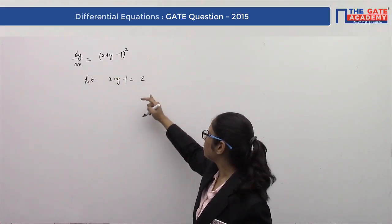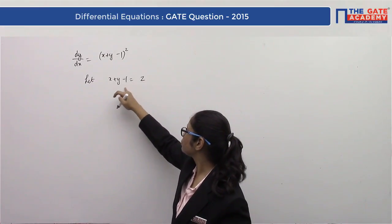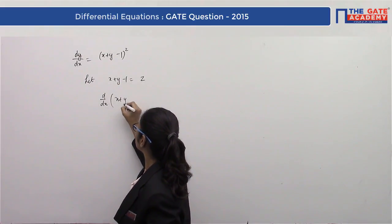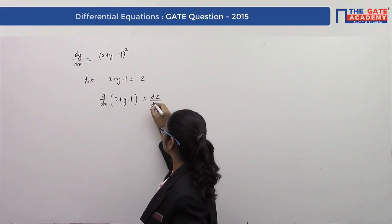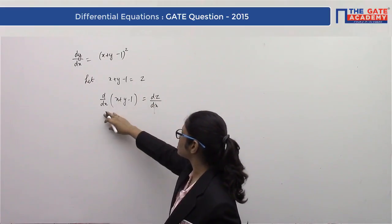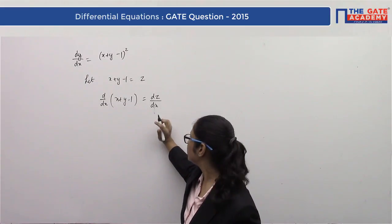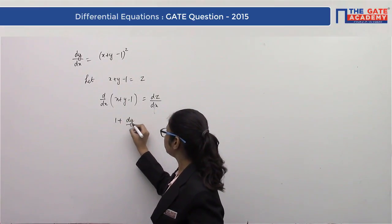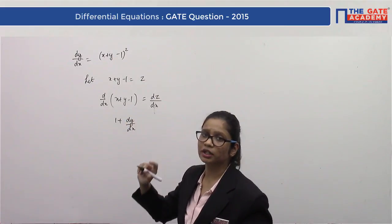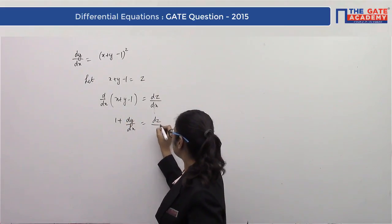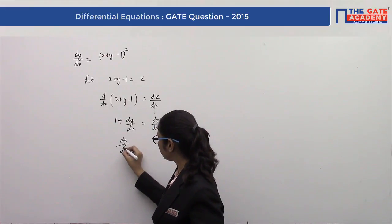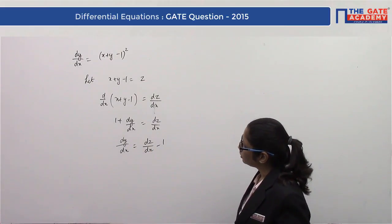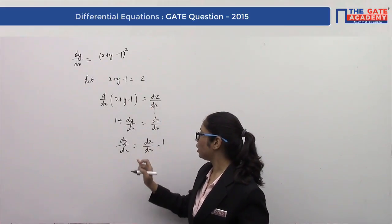First, we find dy/dx in terms of dz/dx by differentiating z = x + y − 1 with respect to x. Differentiating gives dz/dx = 1 + dy/dx, since the derivative of a constant is zero. Therefore, dy/dx = dz/dx − 1.